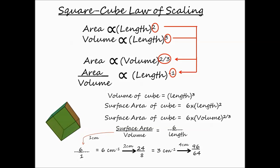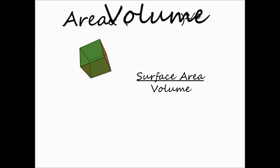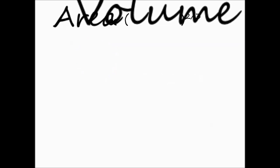Double it again, volume outpaces area, the ratio is now down to 1.5 inverse centimeters. As cube length increases, volume increases faster than area. Surface area to volume ratio shrinks.